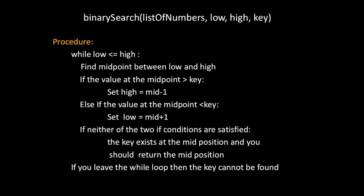So if the value at the midpoint is greater than the key we set high to mid minus one. So we don't need to regard any of the values beyond or to the right of the midpoint because the list is sorted. Else if the value at the midpoint is less than the key we set low to mid plus one. So we can disregard values at the mid and below because our list is sorted again.